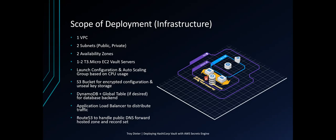We'll be using an S3 bucket for encrypting configuration and to unseal the key, which will be used later in this lecture. DynamoDB plus a global table, if you desire, for database backend — global table will allow for higher availability and larger scaling. An application load balancer to distribute the traffic between the Vault servers, and a Route 53 forward zone to handle public DNS in a record set for that elastic load balancer alias.